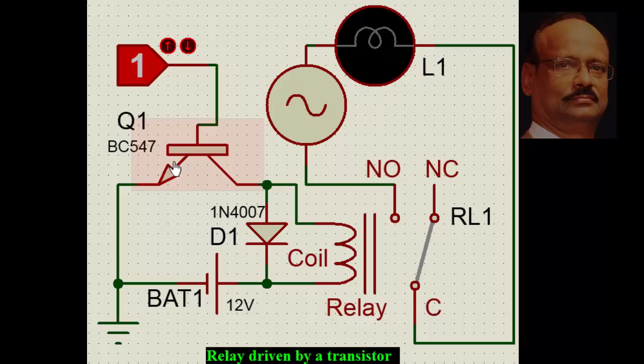The transistor operates the coil through the supply voltage. Now, the supply voltage depends on the coil. The coil could be 5V, then we use a 5V supply, or if the coil is 12V, we use a 12V supply.